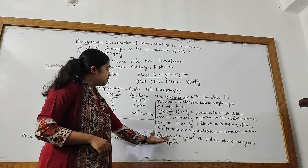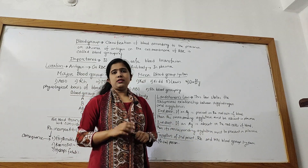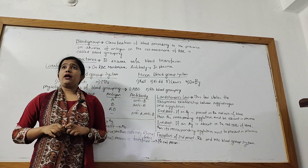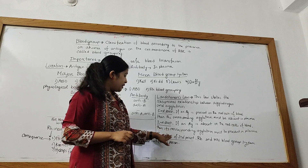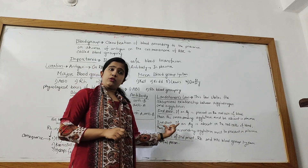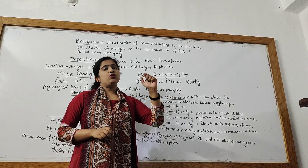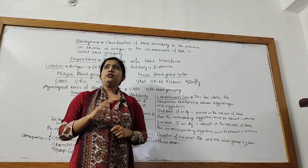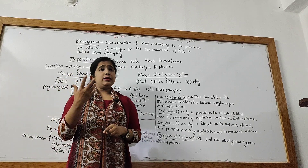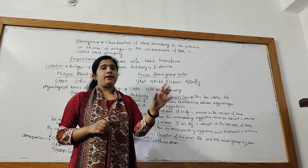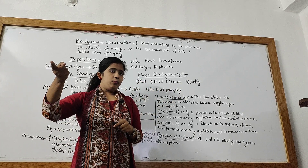There is an exception to the second part, seen in the RH blood group system and MN blood group system. In RH negative, there is no D antigen, but according to the second part, anti-D antibody should be present. However, in RH negative individuals, the anti-D antibody is actually absent — this is the exception.